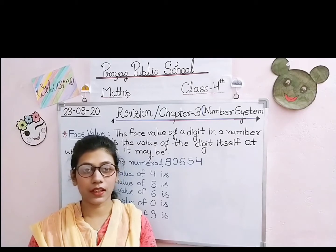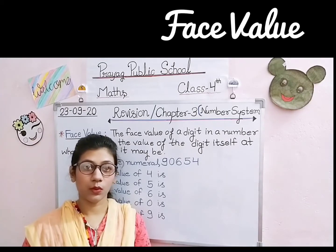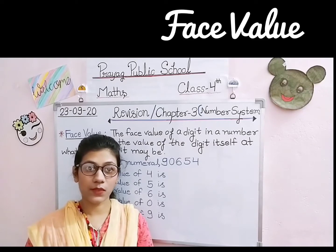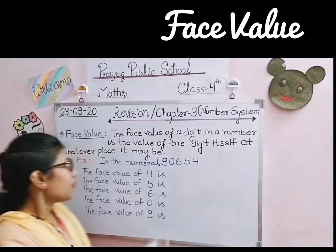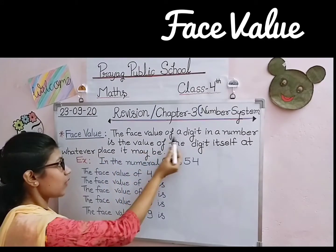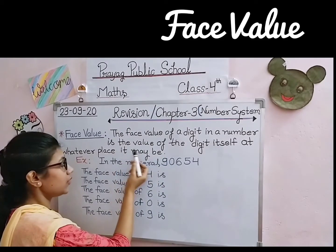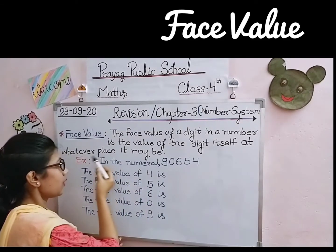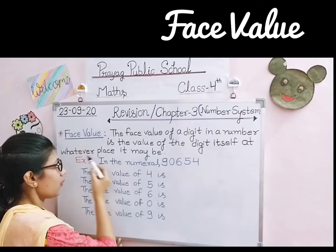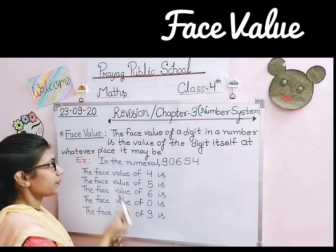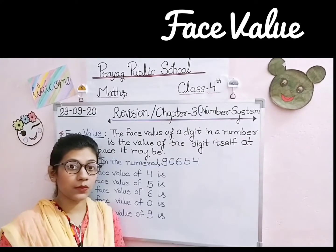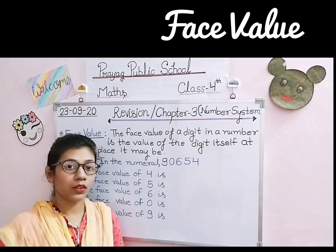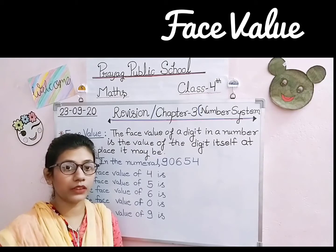So let's get started. The first topic is face value. What is face value? Face value की क्या definition होती है? The face value of a digit in a number is the value of the digit itself, at whatever place it may be. किसी भी digit की face value उस number में वो digit खुद होता है — वो अपनी face value खुद होता है, चाहे वो किसी भी place पर क्यों न रखा हो।